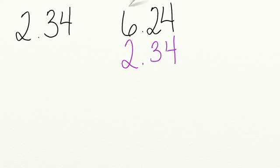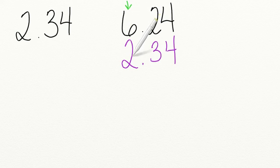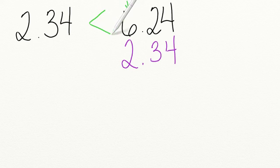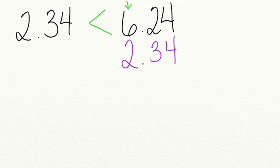Now I'm going to start in the place value furthest to the left. Since six is larger than two, that means that six and twenty-four hundredths is the larger number. That means that two and thirty-four hundredths is less than six and twenty-four hundredths.